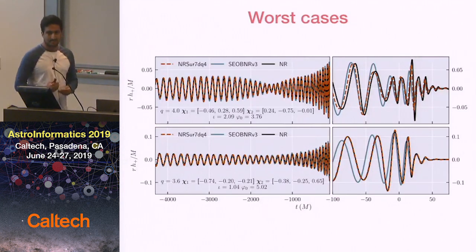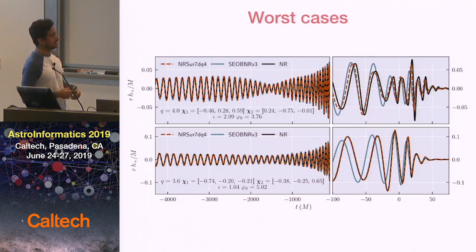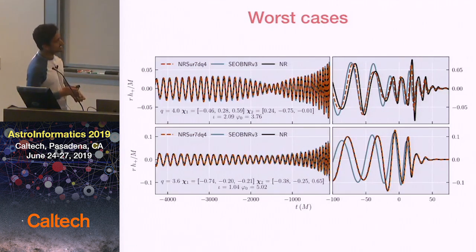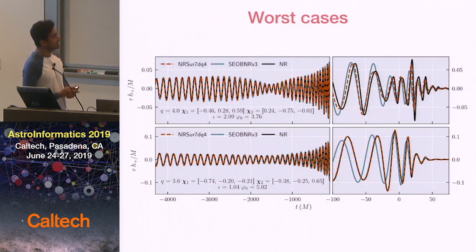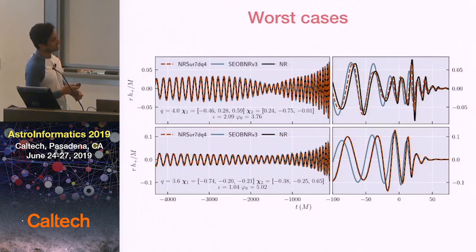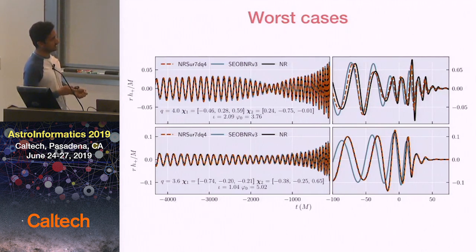Here is an example of how well the model performs. The top case shows the worst performance of our model compared against all 1,500 simulations. The black line is the numerical relativity simulation and the red dashed line is our surrogate model. Even for the worst case, it tracks the numerical relativity simulation reasonably closely and captures all the modulations due to precession. Comparing that with the existing model SEOB-NRV3, which uses the approximate methods I talked about, that model shows a much more significant deviation from the numerical relativity simulation.